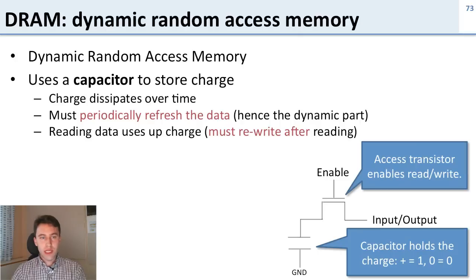The problem with DRAM is the charge dissipates over time. It's not a perfect capacitor. Some of it leaks through the enable transistor, some of it leaks through the circuit itself, and so over time the capacitor discharges which means your data disappears.